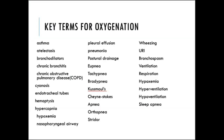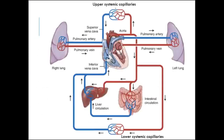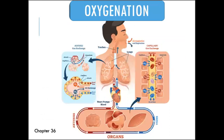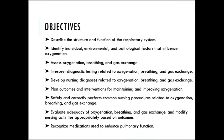These are our key terms for oxygenation. This is a basic visualization of how your heart and lungs work together to provide your body with the oxygen and blood that it needs. The concept of oxygenation refers to how well the cells, tissue, and organs of the body are supplied with oxygen. These are the chapter's objectives.